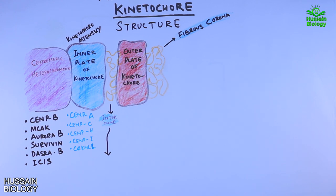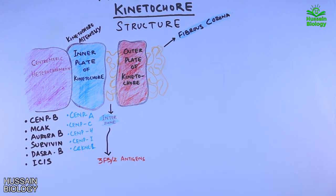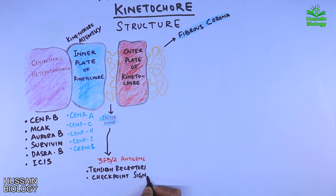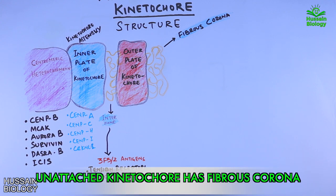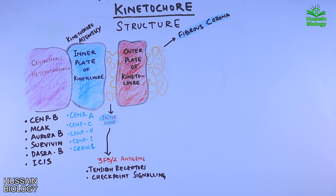The inner zone contains 3F3 antigen proteins, which act as tension receptors as well as checkpoint signaling components. The fibrous corona is only present in the absence of microtubules, meaning only an unattached kinetochore will have a fibrous corona. The fibrous corona aids in microtubule anchoring, and research shows it also interacts with the CENP-E protein.